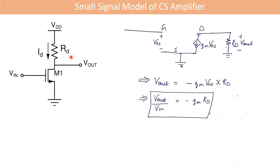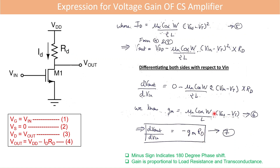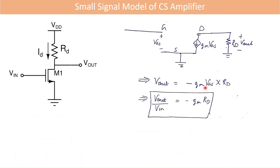We can obtain the same result using the small signal model. In the small signal model, ignoring channel length modulation for now, VOUT equals minus GM times VGS times RD, because GM times VGS is a current source so VOUT equals I times R. Again the gain expression is minus GM times RD.